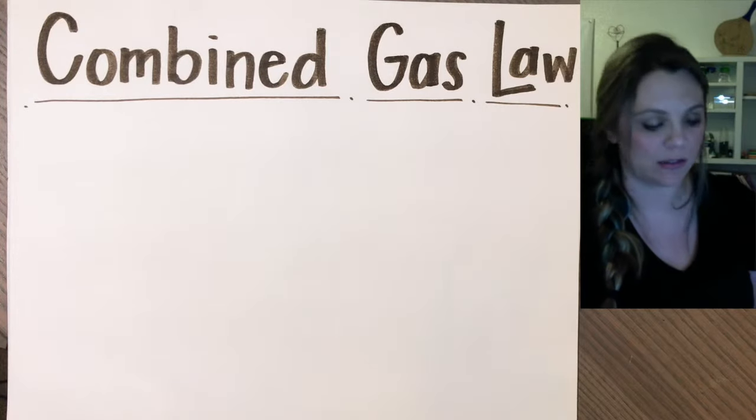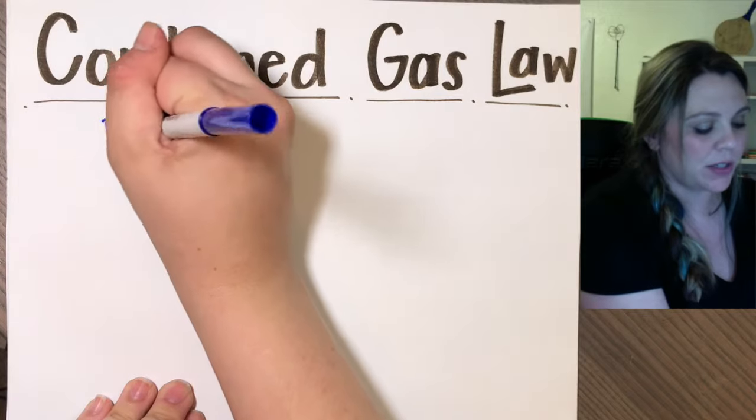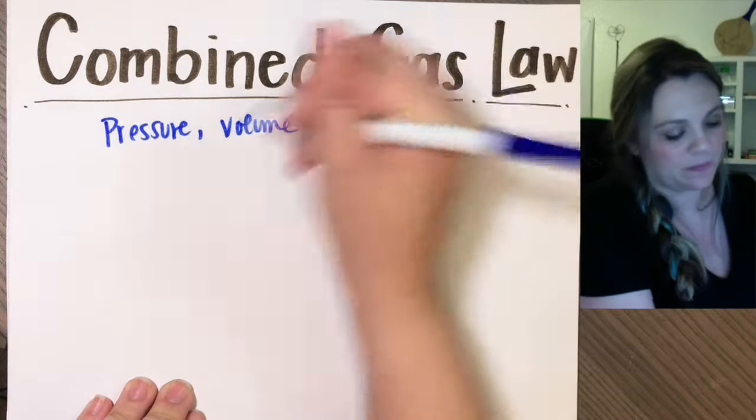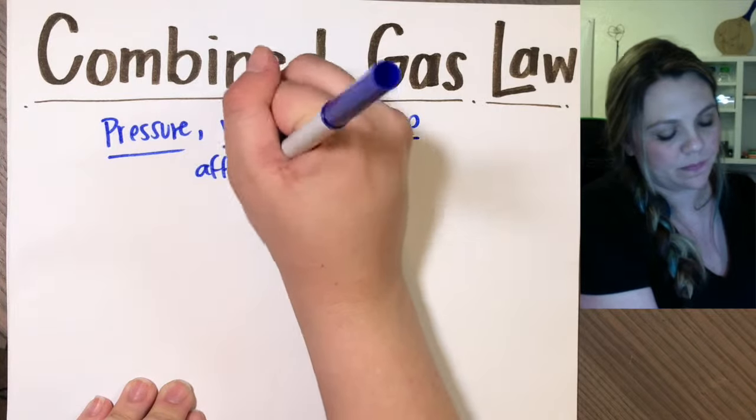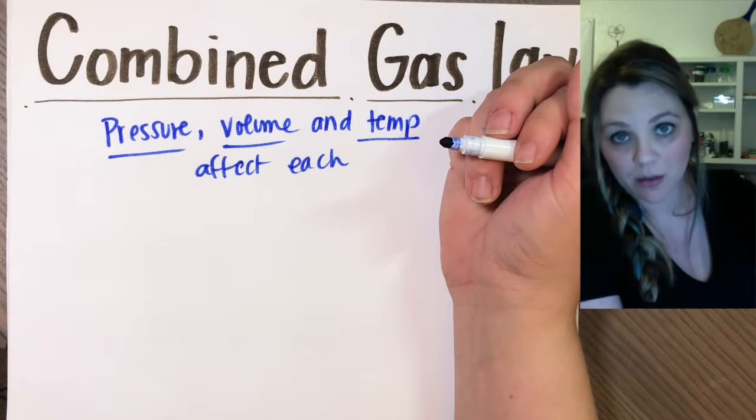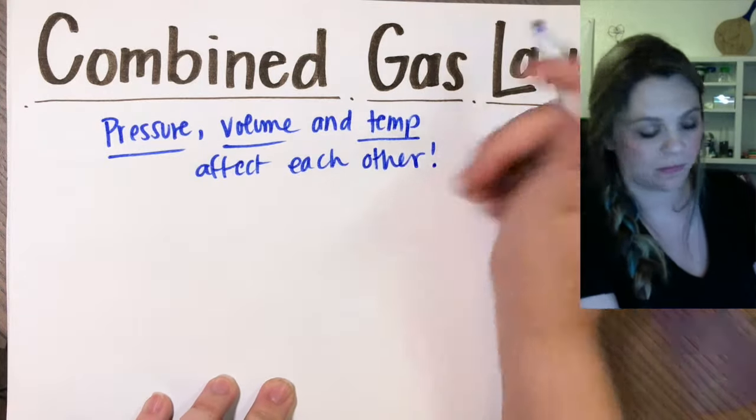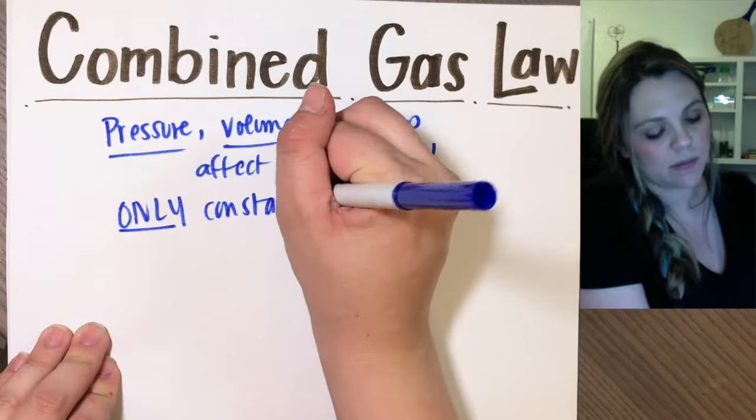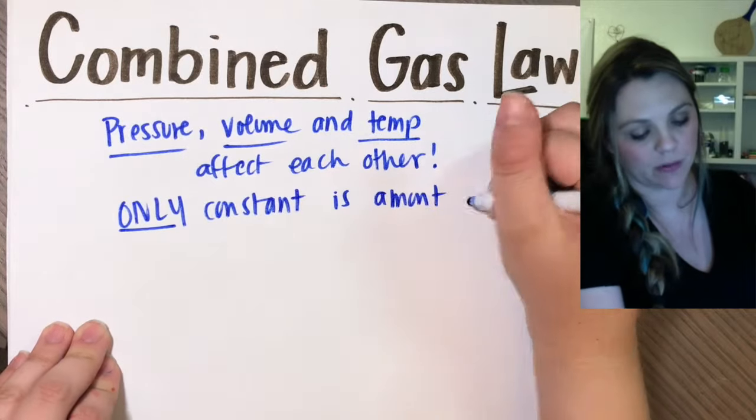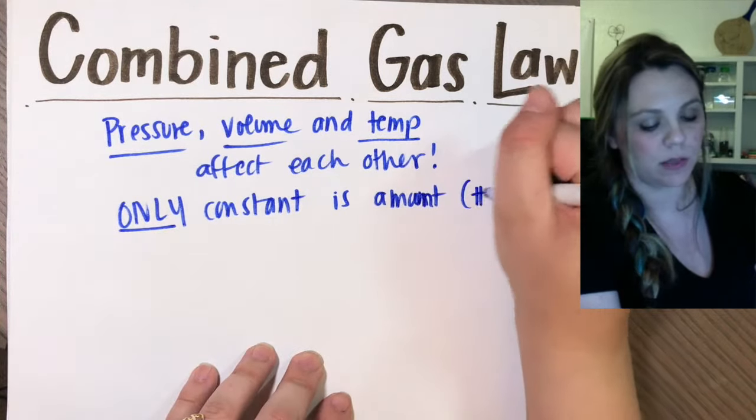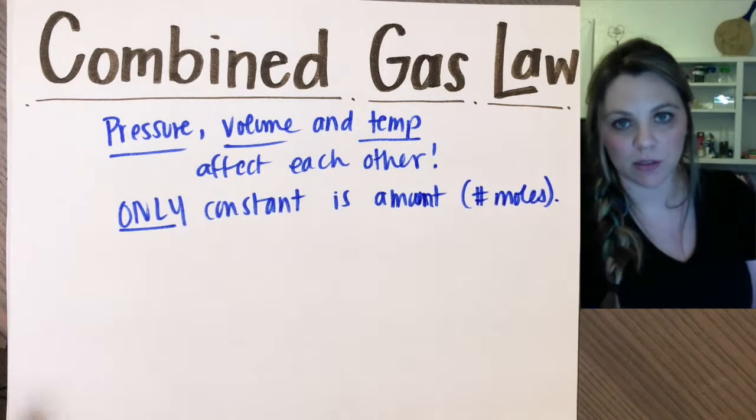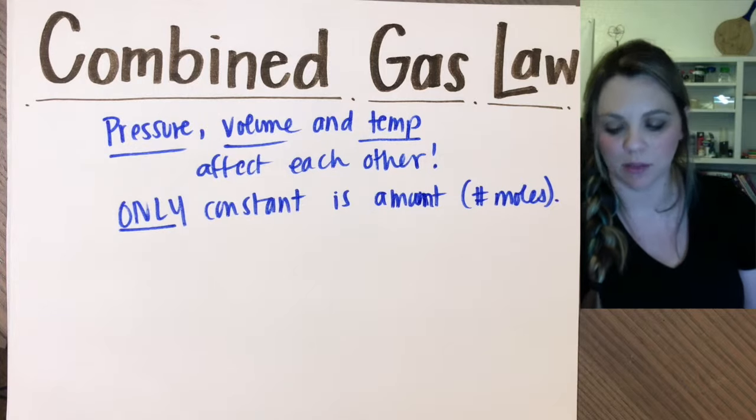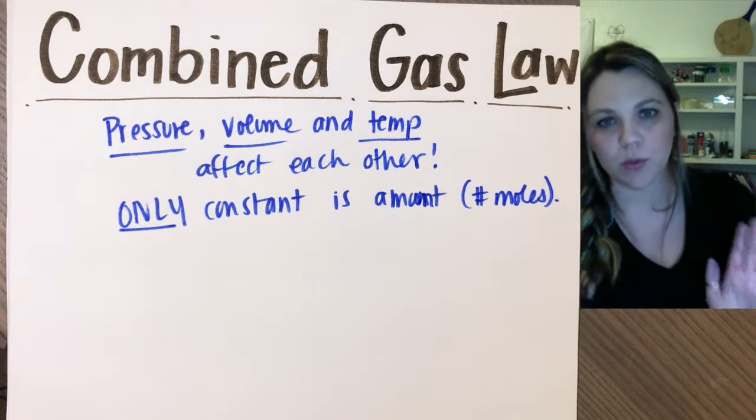The combined gas law shows how pressure, volume, and temperature affect one another. We're going to be able to change all three of these. The only thing that is kept constant is the amount of gas, the number of moles. Everything else is changing. Again, I'm going to be able to change pressure, volume, and temperature. That's why we call it the combined gas law.